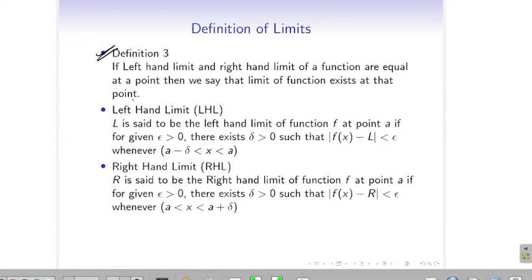Definition 3 is based on two sub-definitions: left-hand limit and right-hand limit. It says if the left-hand limit and the right-hand limit of a function are equal, then we will say that the limit of the function exists at that point. You may ask what is left-hand limit and what is right-hand limit.